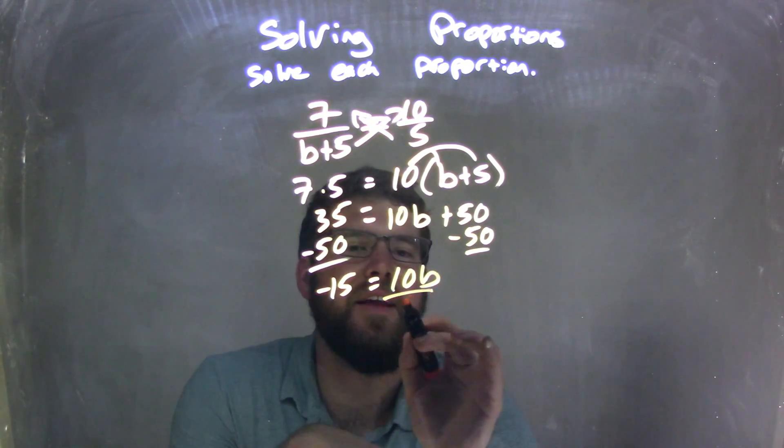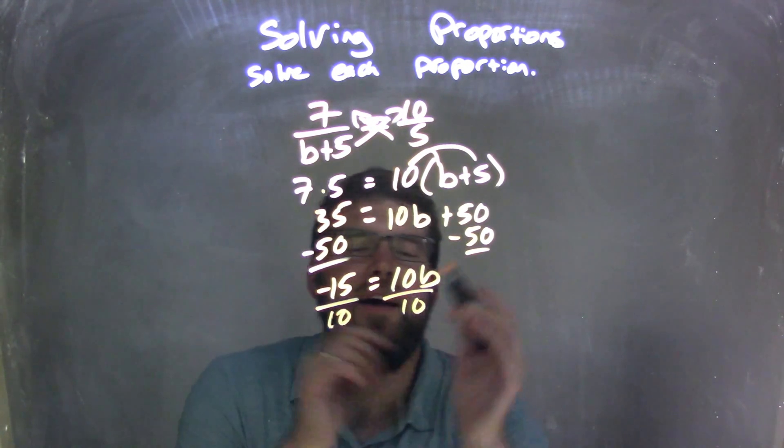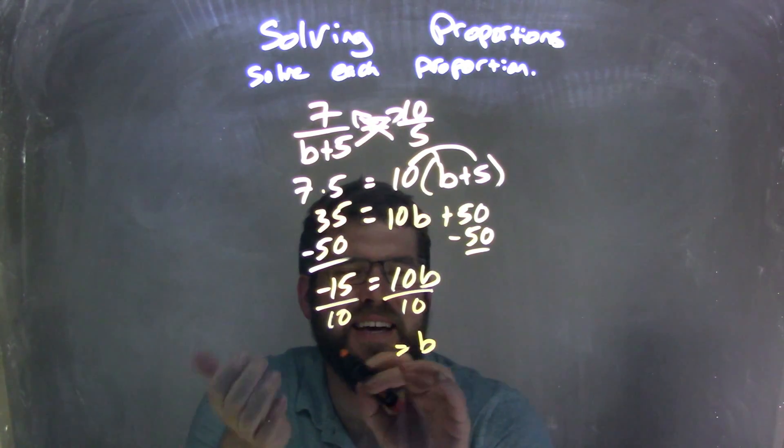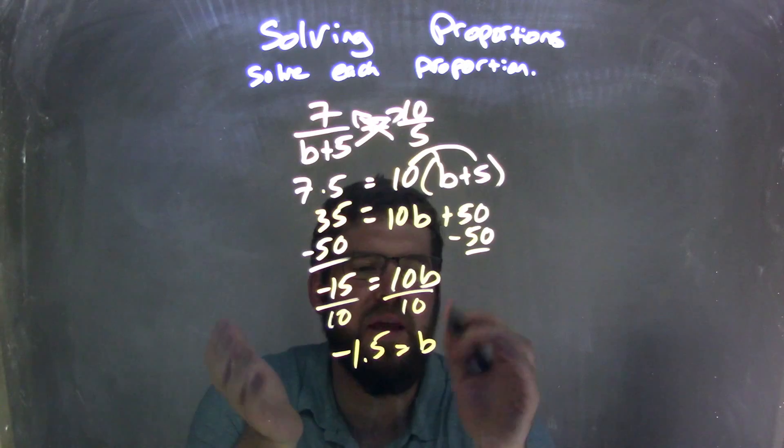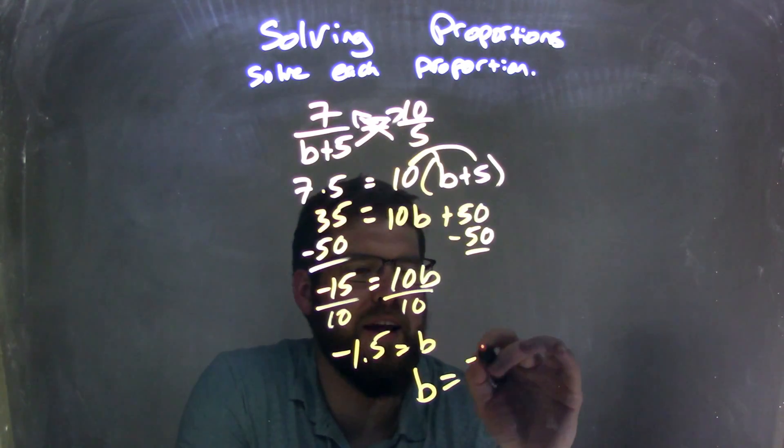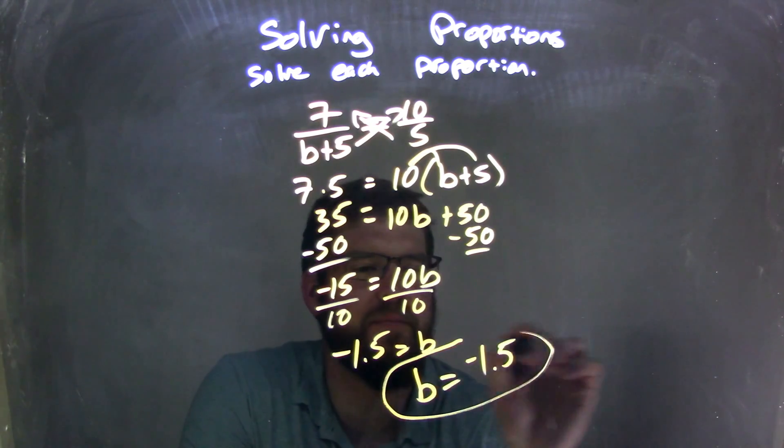This equals 10b, and then I divide by 10 on both sides. Hopefully you can do this off the top of your head, but negative 15 divided by 10 is negative 1.5. Let's write b first because that looks nicer, so b equals negative 1.5.